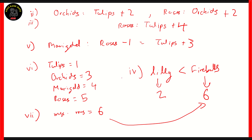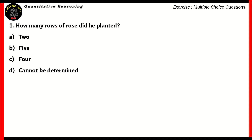Now let's look at the four questions for this particular direction. How many rows of roses did he plant? That's easy — we calculated that: tulips plus four, which is equal to five. So option B is the right option. Two is for lilies, four is for marigolds, so option B is the right option.